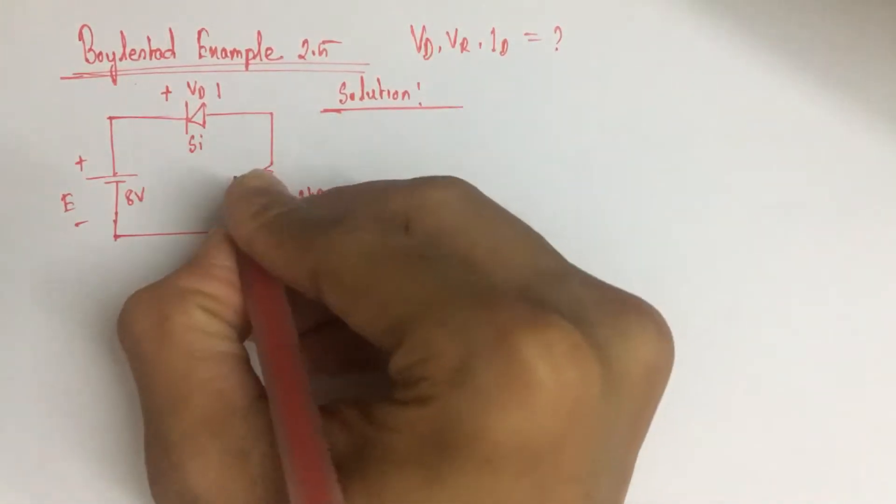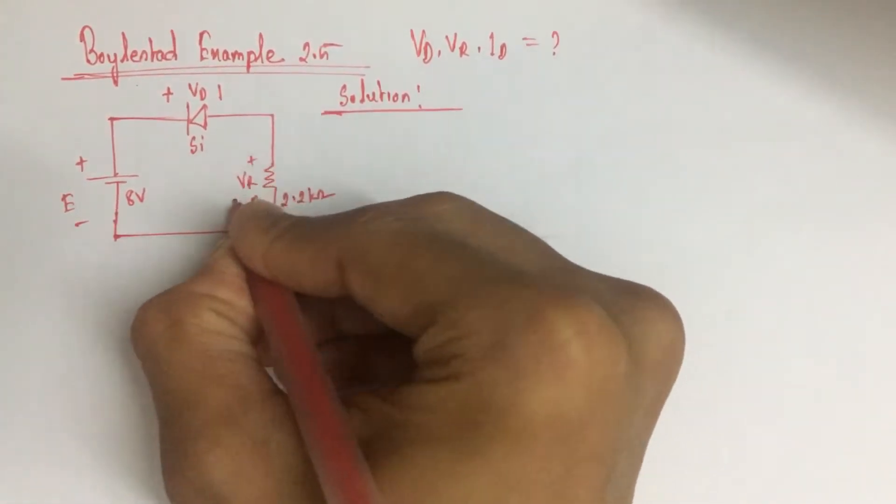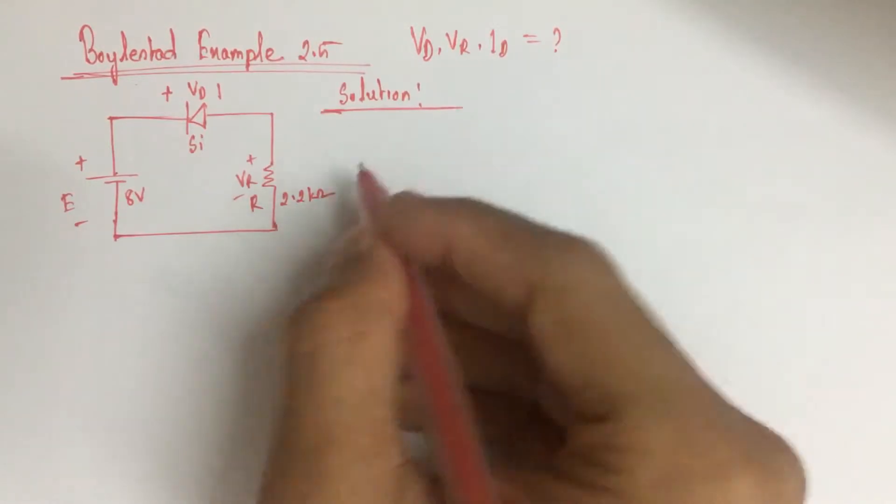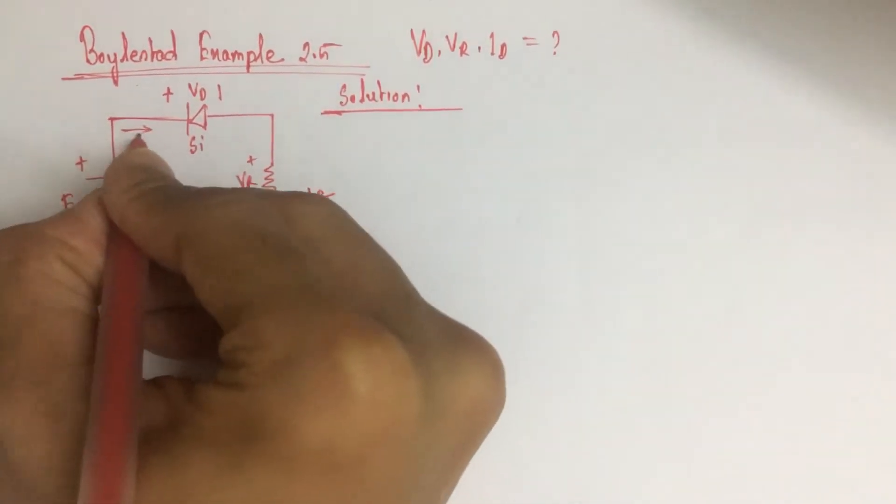and the voltage VR which is across the resistance 2.2 kilo ohm and the current ID which is through the diode.